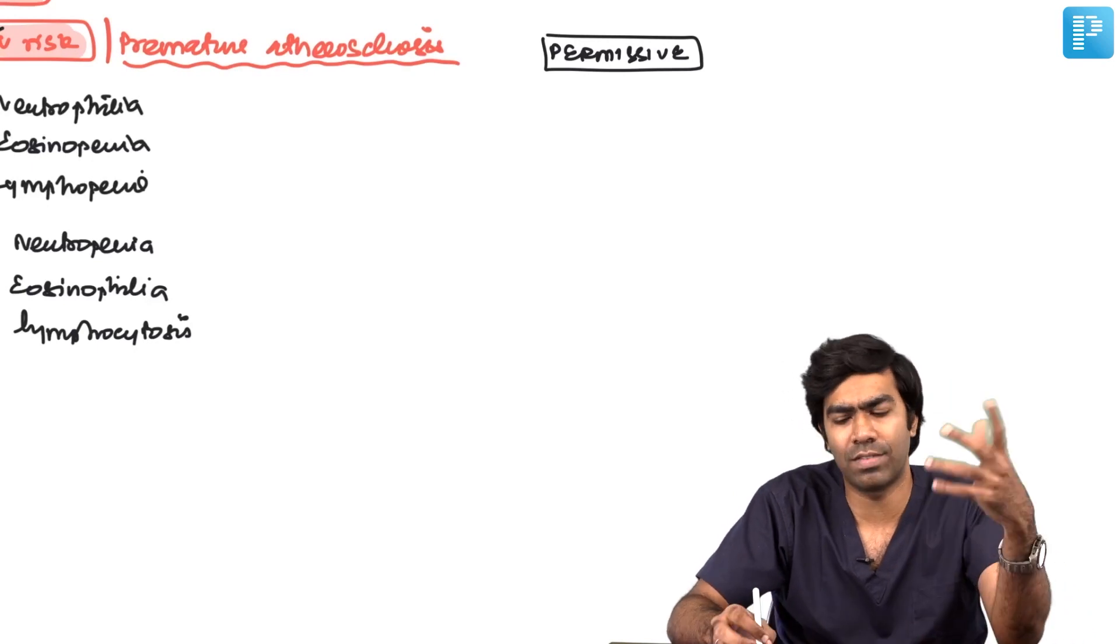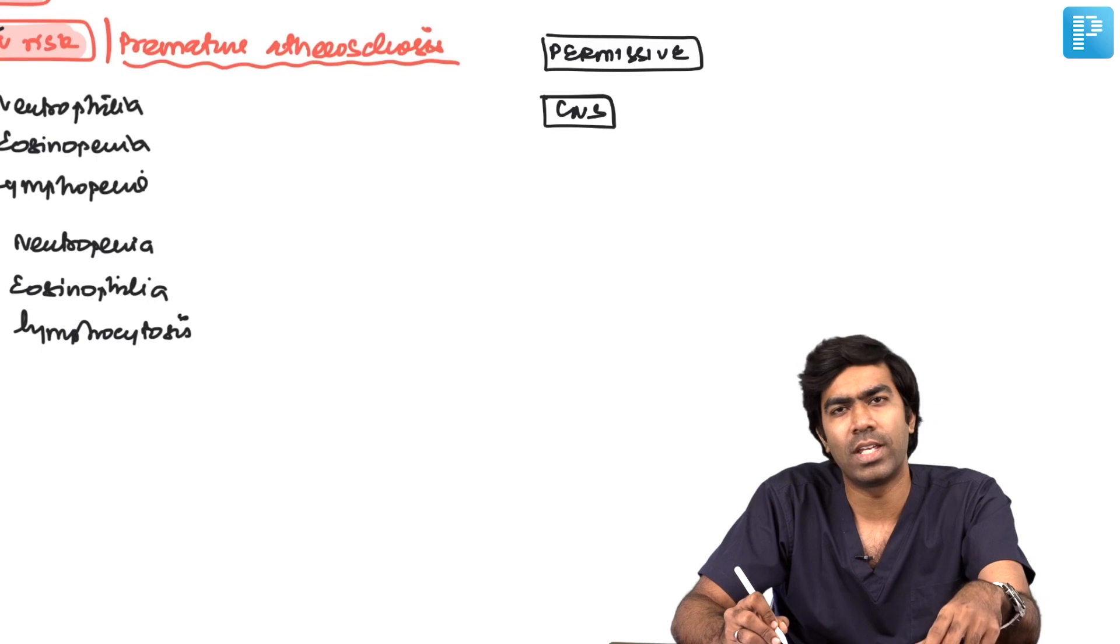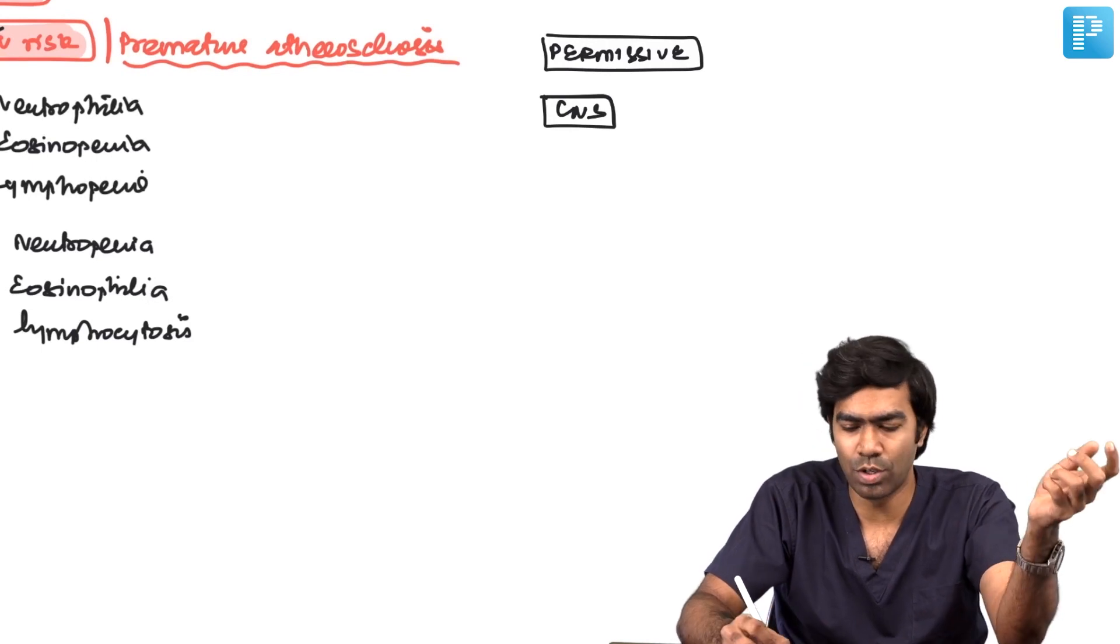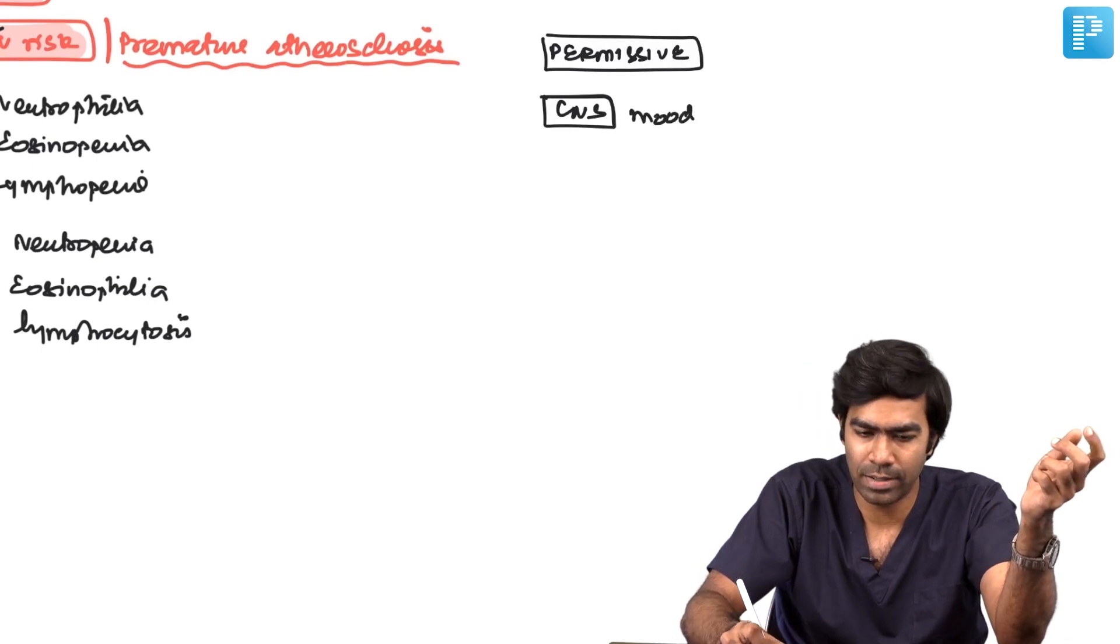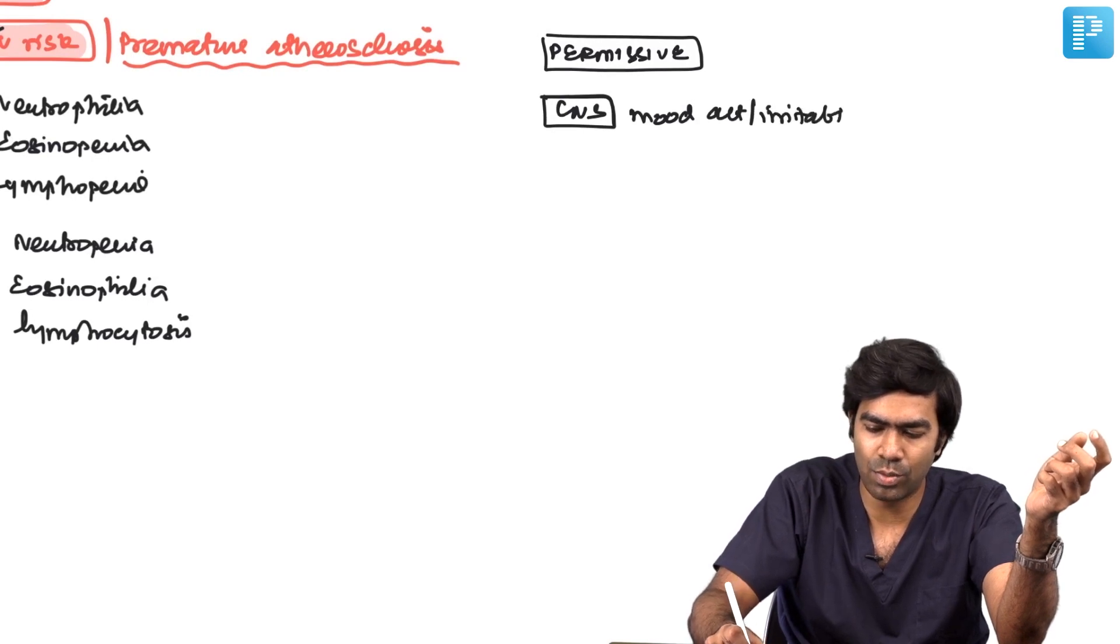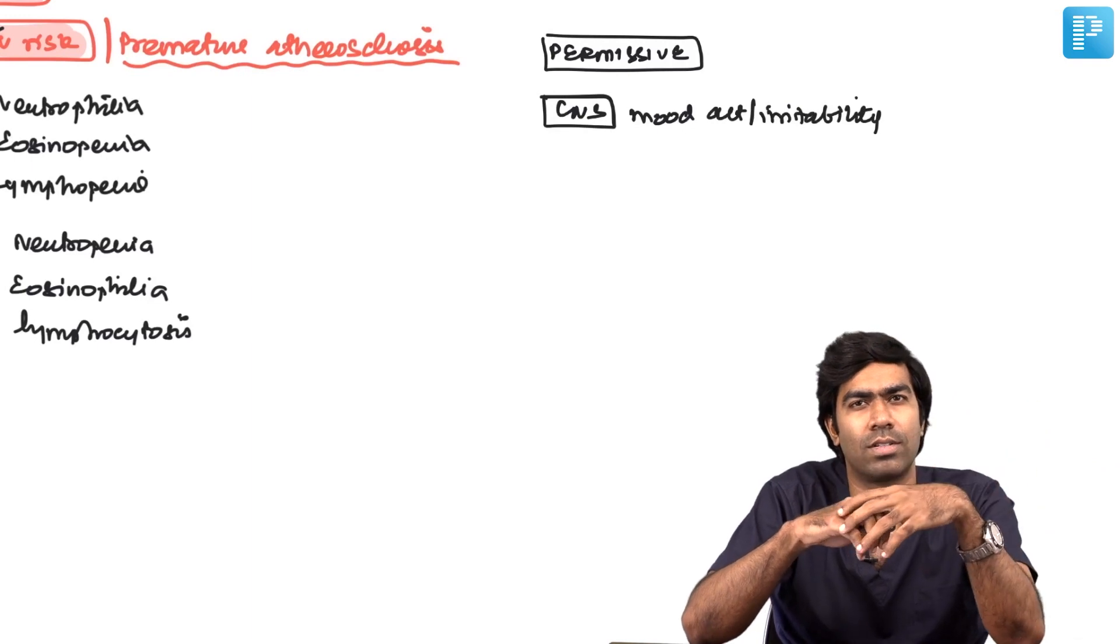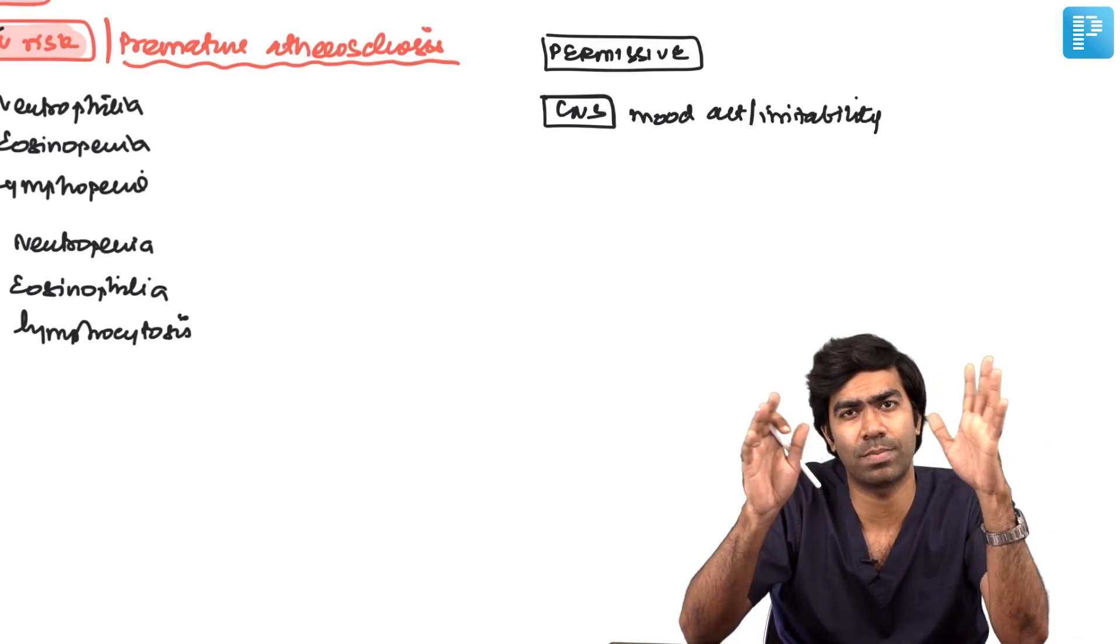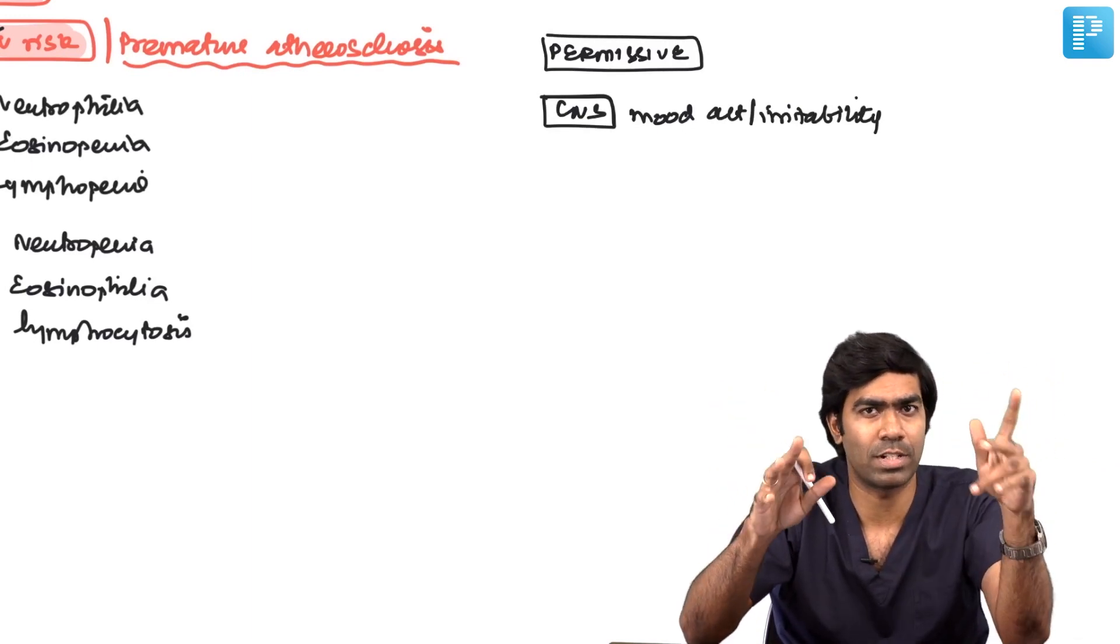There are effects on the central nervous system also. In the CNS, cortisol is known to produce mood alterations and irritability, which will translate clinically to psychosis after starting steroids. Even a single shot of steroids can cause psychosis, especially seen in the ICU.